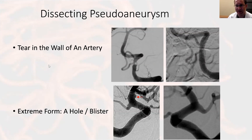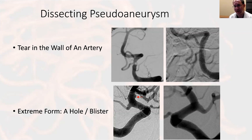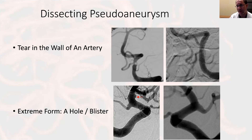The extreme form of a dissecting pseudoaneurysm, or tear in the wall of an artery, is what we refer to as a blister. A blister is typically diagnosed in the setting of a hemorrhage and often appears as a tiny bump in the artery — the red arrow is showing the blister. These are also treated with flow diverting stents.